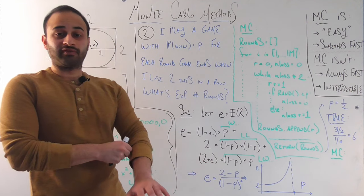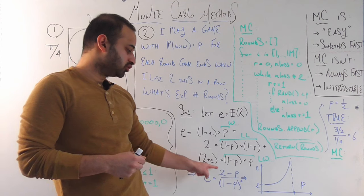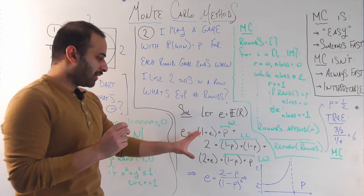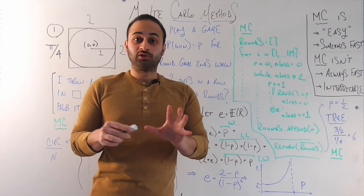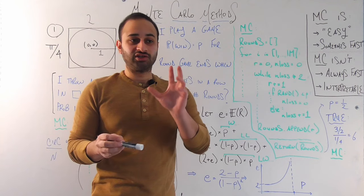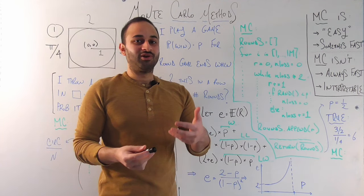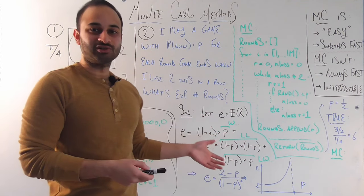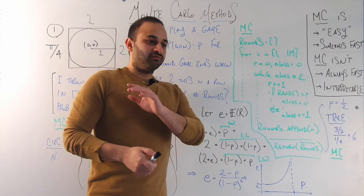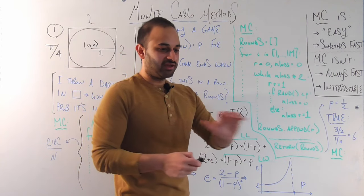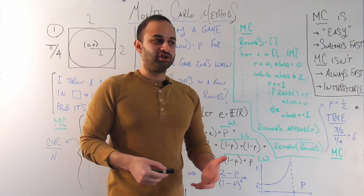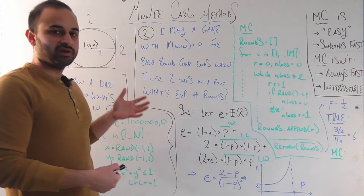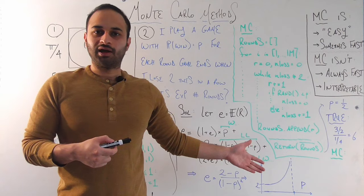If you do all the algebra, you can solve for e. You'll get the closed form solution that little e equals (2 minus p) divided by (1 minus p) squared. The main point I want to get across is that it took me a while to explain this, a while to work out the algebra, and a long time to even arrive at this approach. What if instead of doing all that, we just coded it? We took advantage of our high computing power and coded a solution to estimate the answer that way.